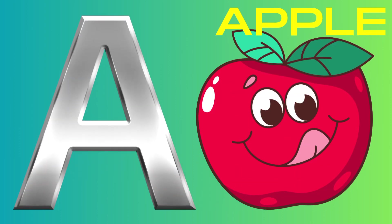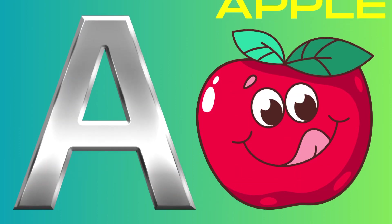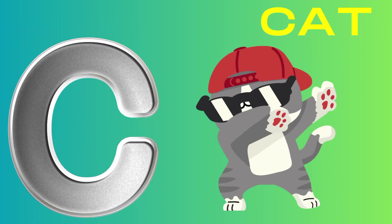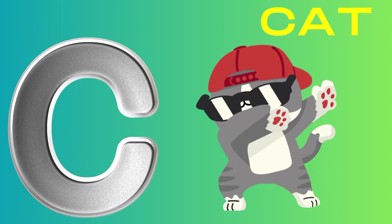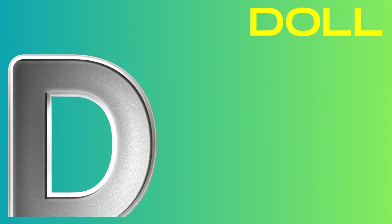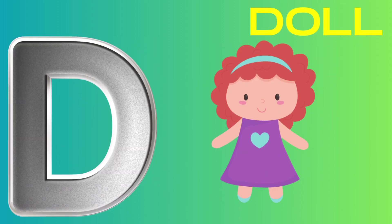A is for apple, a-a-apple. B is for ball, f-f-ball. Z is for cat, c-c-cat. D is for doll, d-d-doll.